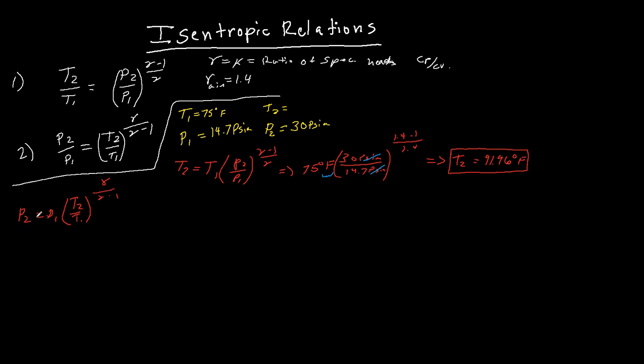So just to prove this, let me use the same numbers that we did in the first example. So let's say we've got P1 here, 14.7 PSIA. And our T2 is what we solved for, 91.96 degrees Fahrenheit. And what was our initial temperature? 75 degrees Fahrenheit to the 1.4 over 1.4 minus 1.